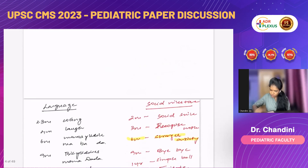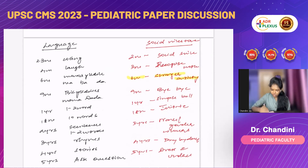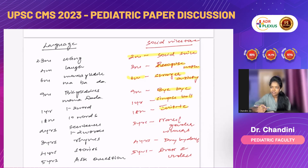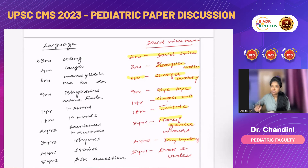Other social milestones: at two months, the first milestone is social smile — the child smiles in response to a stimulus. At three months, the child recognizes mother. At six months, stranger anxiety appears. At nine months, the baby waves bye-bye. At one year, the baby can play simple ball games. At eighteen months, the baby can imitate household works. At three years, the baby knows name and gender. At four years, the baby is dry by day. At five years, the baby can dress and undress.